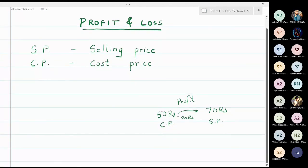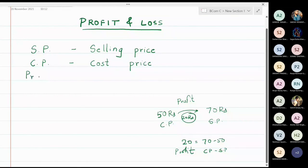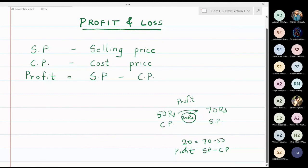This 20 came from 70 minus 50 — 70 is the selling price and 50 is the cost price — and this 20 is called profit. So the formula for profit is: profit equals selling price minus cost price.